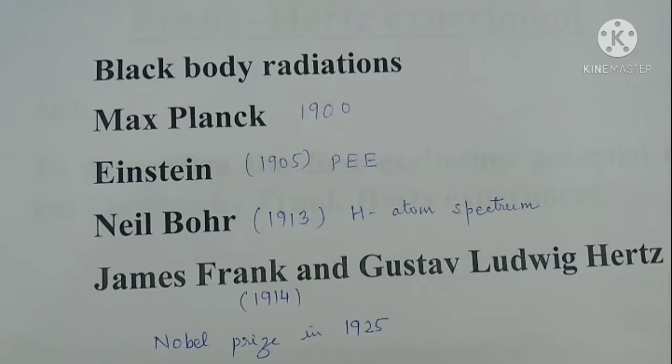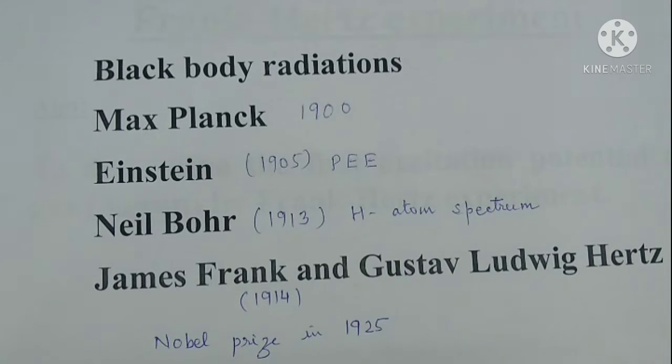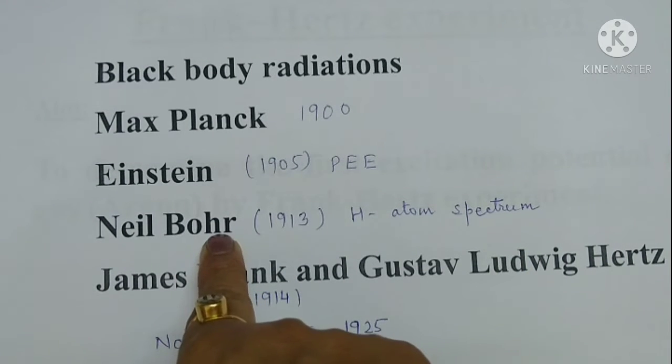Bohr successfully explained the hydrogen spectrum and established the belief that transfer of energy of electrons in an atom is in discrete amounts rather than continuous. However, it required endorsement from experiments.